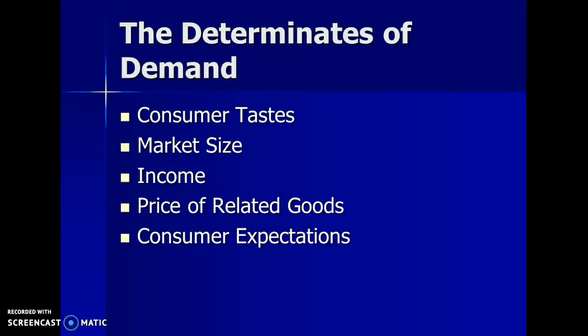These are called the determinants of demand. They determine what the demand for a particular good is without involving a change in price. These determinants include consumer taste, the size of the market, a change in consumer income, the price of related goods, and future expectations as consumers. For example, if we make more money, our demand goes up because we have more money to spend; if we lose our job, demand goes down for most products.